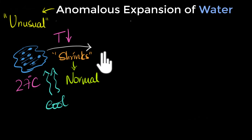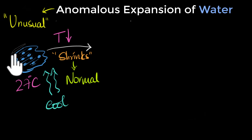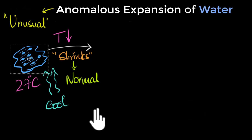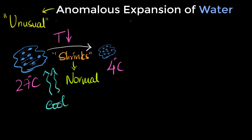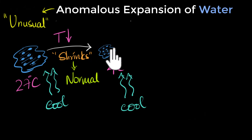But this normal behavior only continues until you hit four degrees Celsius. Because once you go below four degrees Celsius, something very unusual happens. Until we hit four degrees Celsius, water keeps contracting. But cool it further, and mysteriously, water doesn't shrink anymore. Instead, it expands. And that is what we call the anomalous expansion.